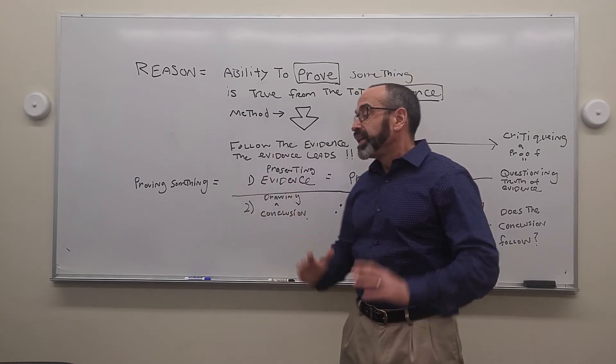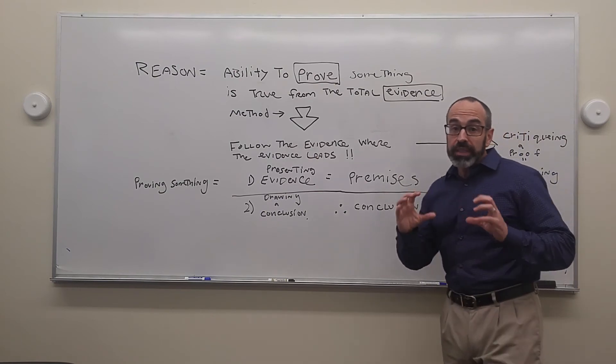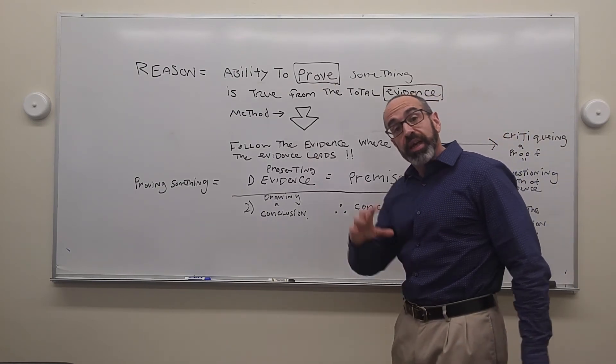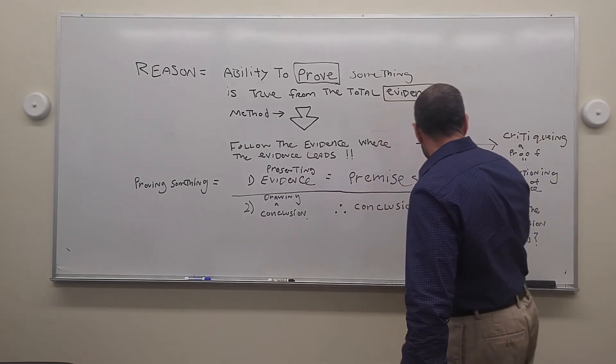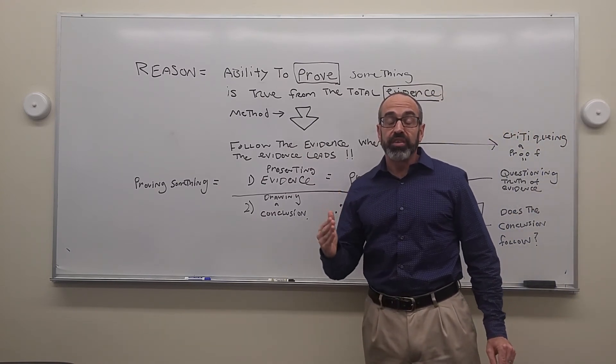And thus, a proof consists of two parts. Premises that lead to a conclusion, or at least claim to lead to a conclusion. And our goal is to critique, to see whether the argument or proof is a good one.